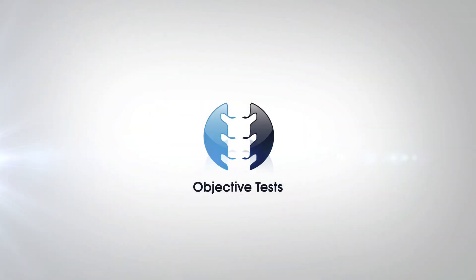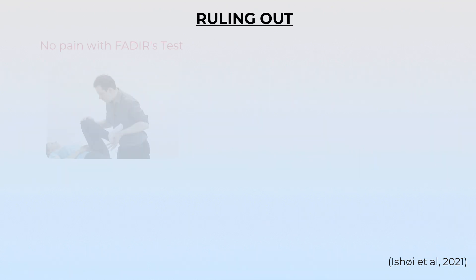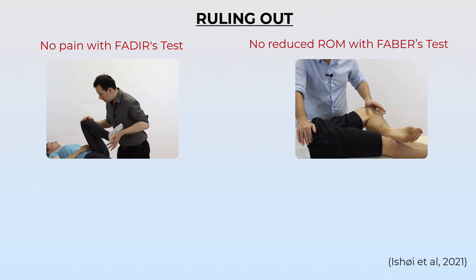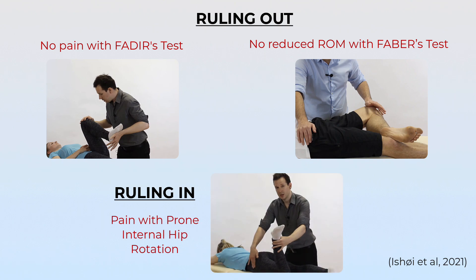Next, objective tests. What physical examination signs might lead us to this FAI diagnosis? We have a brilliant paper from Isho et al which found that the tests with the best diagnostic effectiveness for ruling out FAI were when patients had no pain during a FEDIR test and no restricted range of movement during a FABUS test compared with the other side. The most favourable ruling-in test was pain during prone internal rotation of the hip when the knee was at 90 degrees, which presented a 94% specificity. We can also use x-rays to supplement the findings when it comes to diagnosis.